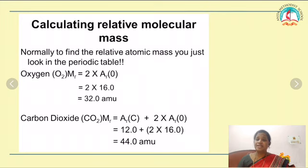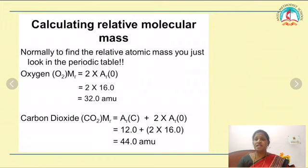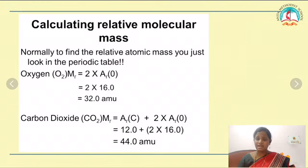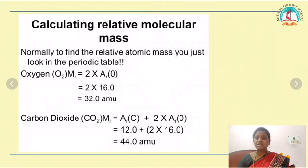Next, how to calculate relative molecular mass — this is quite easy. For example, if we want to calculate the relative molecular mass of oxygen: oxygen is O₂, meaning two atoms of oxygen. So it is 2 (number of atoms) multiplied by the atomic mass (AR). We just found the atomic mass of oxygen is 16, so 2 × 16 = 32 amu is the relative molecular mass of oxygen.